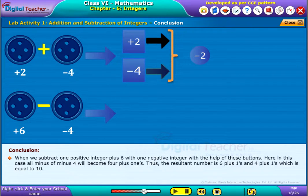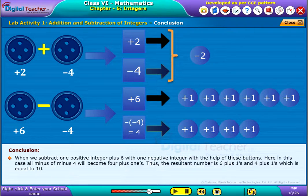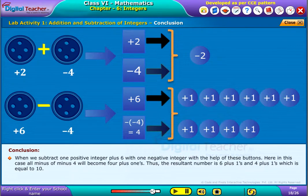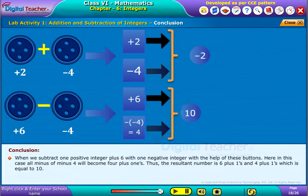Then we subtract 1 positive integer plus 6 with 1 negative integer with the help of these buttons. Here in this case all minus of minus 4 will become 4 plus 1s. Thus the resultant number is 6 plus 1s and 4 plus 1s which is equal to 10.